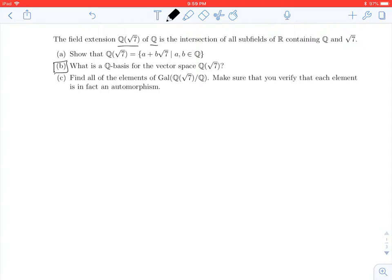In a previous video, we showed that every element in Q adjoin root 7 could be written as A plus B times the square root of 7, where A and B are rational. In this problem, we want to find a Q-basis for Q adjoin root 7, thought of as a vector space over Q.